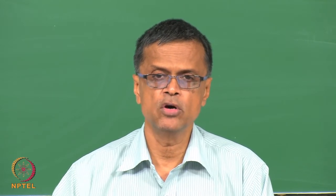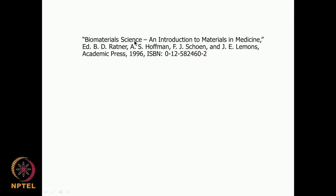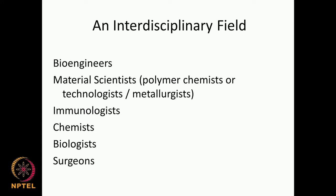This is a good book to follow: Biomaterial Sciences and Introduction to Materials in Medicine. It gives a lot of information on biomaterials. As I go along, I will suggest some other books also, but this is a good book to follow. It is an interdisciplinary area. It involves expertise of bioengineers, material scientists, polymer chemists, polymer technologists, metallurgists, and immunologists — because the material could cause an immune response.